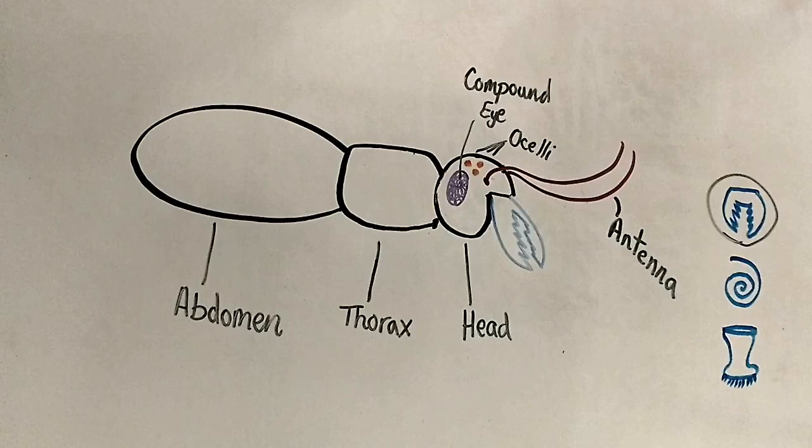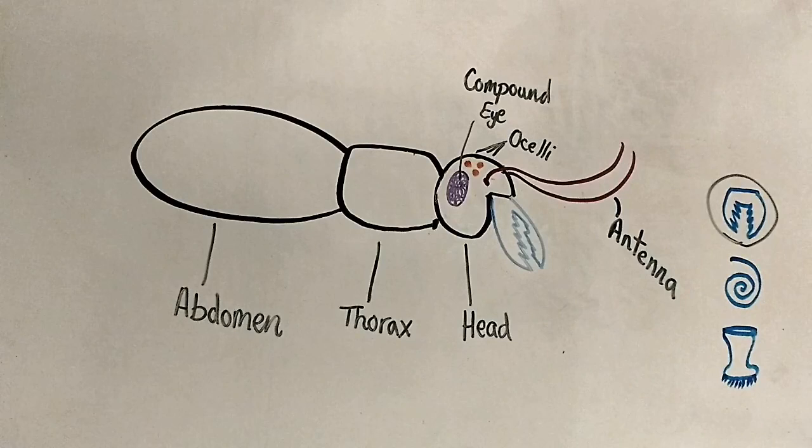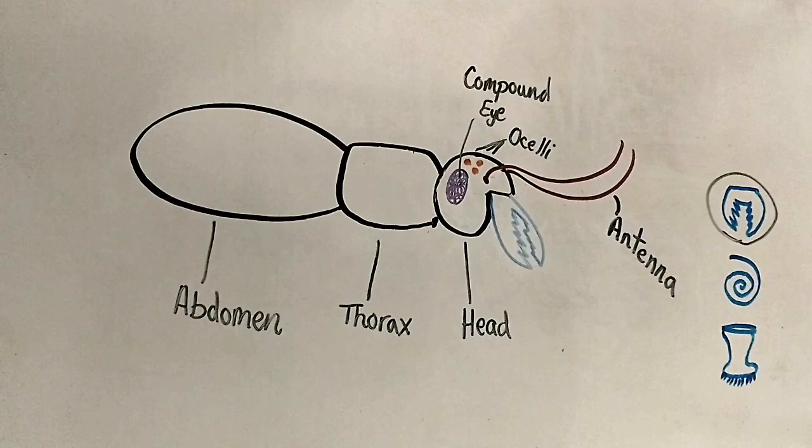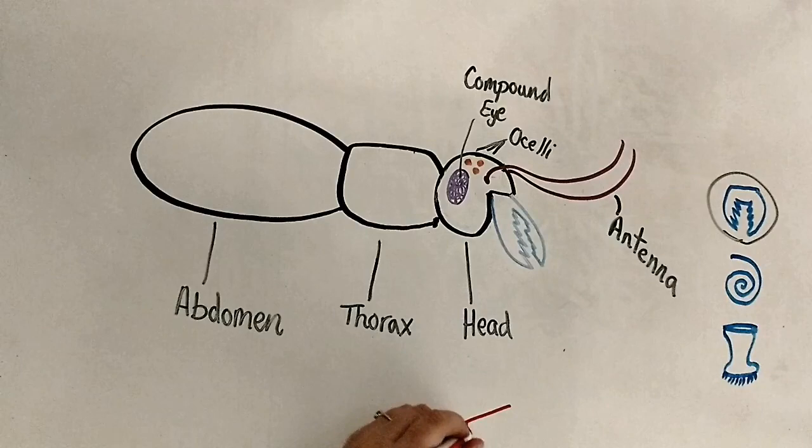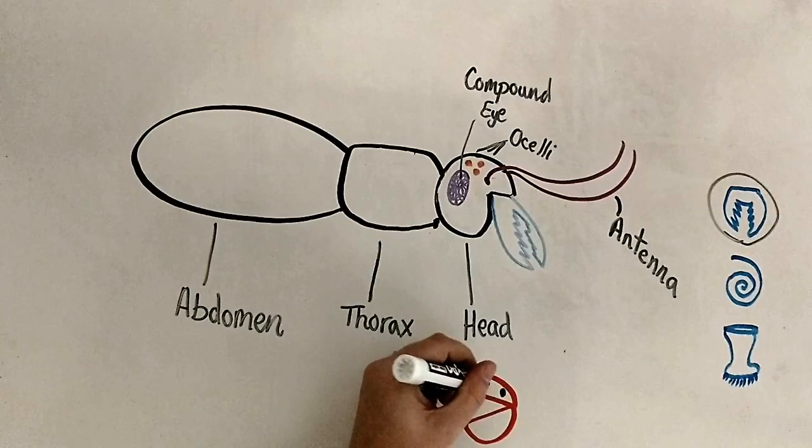Let's move on to the thorax. The thorax is all about movement. All six legs are on the thorax, along with either one or two pairs of wings. Insects also have different adaptations to their wings. Beetles have a hardened first pair of wings that are used as a shell instead of for flying — these are called elytra.